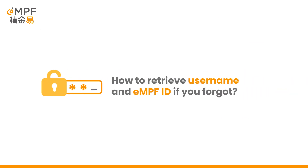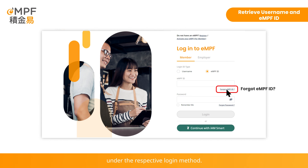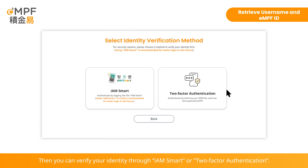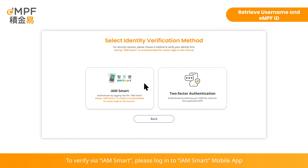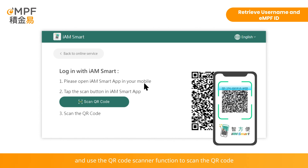How to retrieve your username and EMPF ID if you forgot. On the EMPF login page, simply click 'Forgot Username' or 'Forgot EMPF ID' under the respective login method. Then you can verify your identity through iAM Smart or two-factor authentication. To verify by iAM Smart, please log in to the iAM Smart mobile app and use the QR code scanner function to scan the QR code shown on your computer web page and follow the instructions.